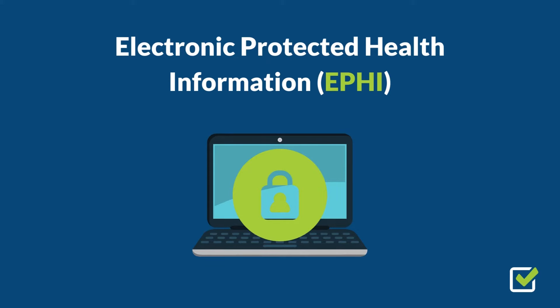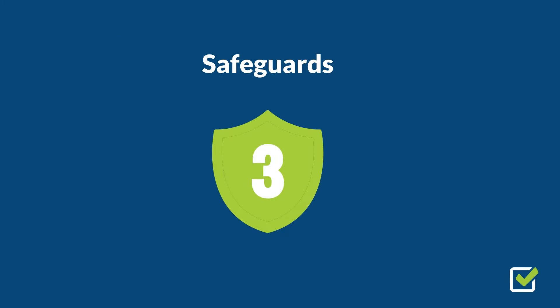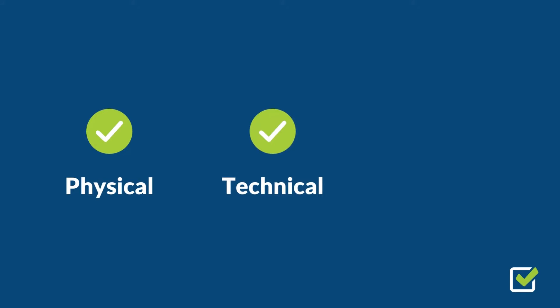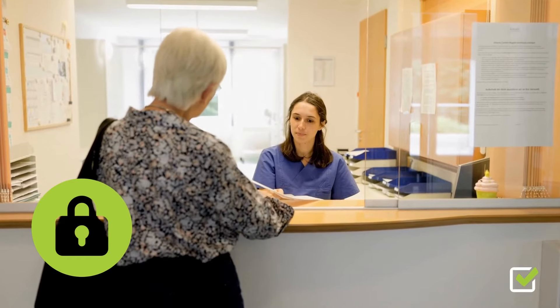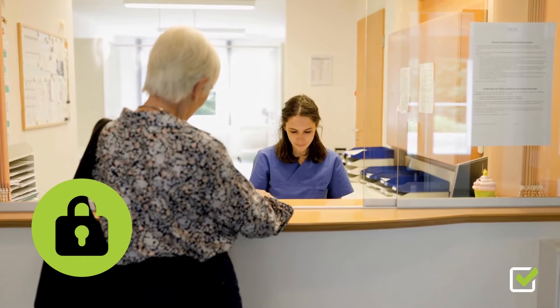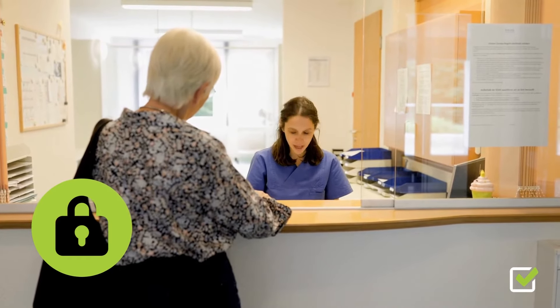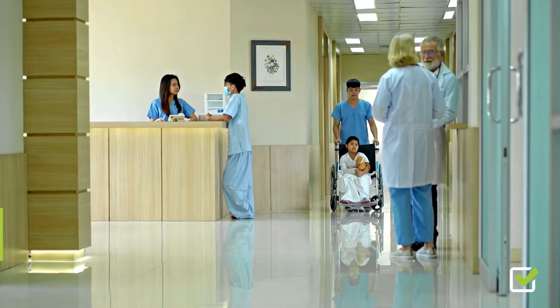The HIPAA Security Rule mandates the protection of electronic protected health information, or ePHI, and outlines three safeguards: physical, technical, and administrative. Implementing these safeguards is critical for protecting patient PHI.